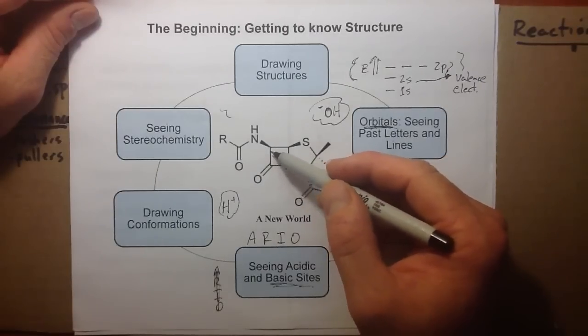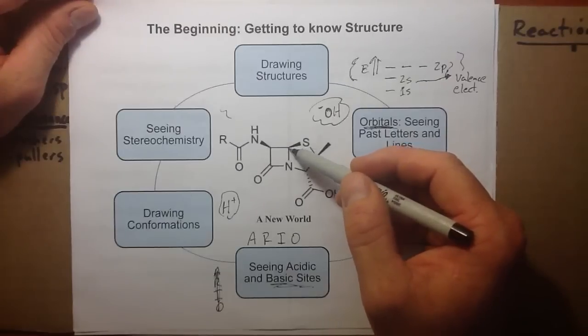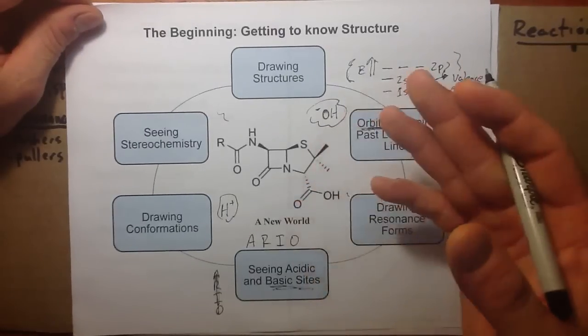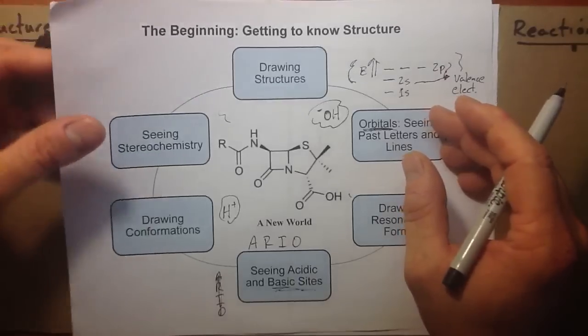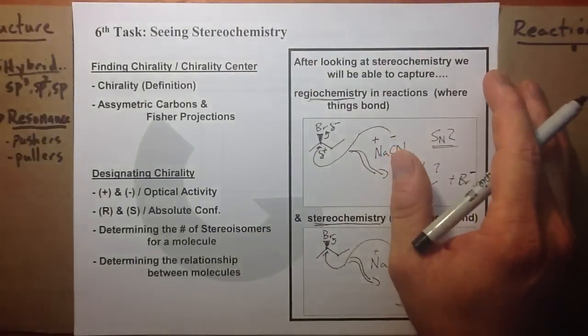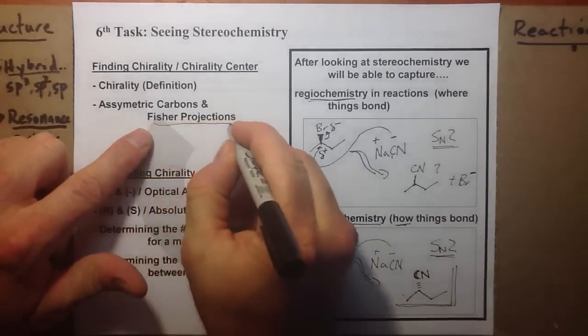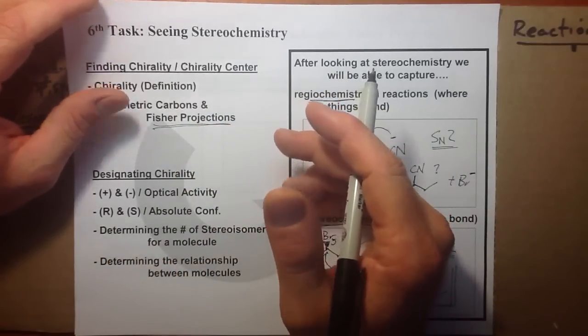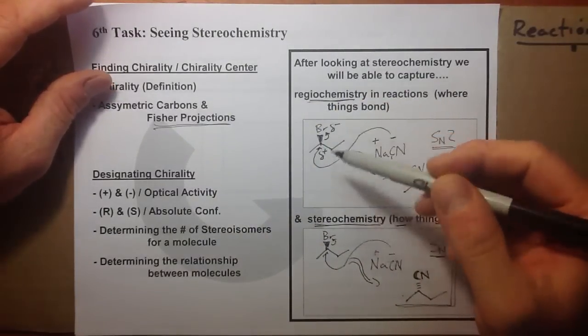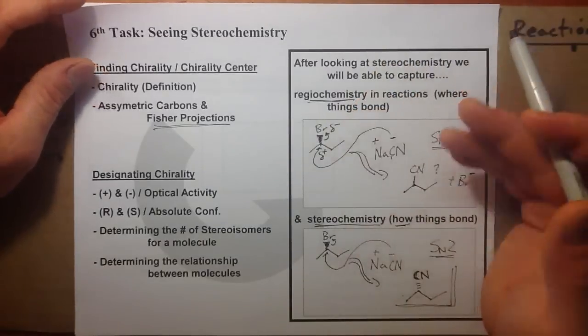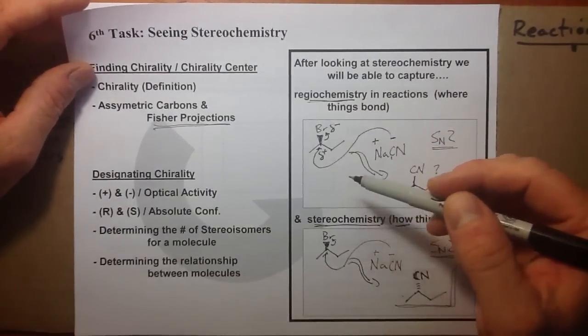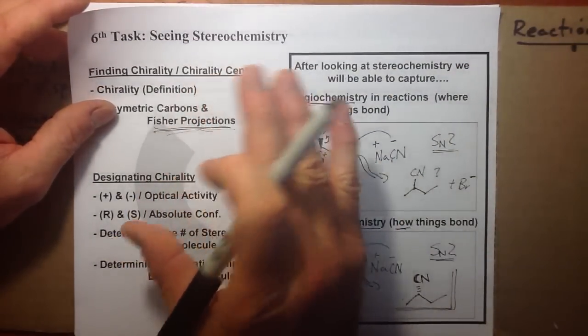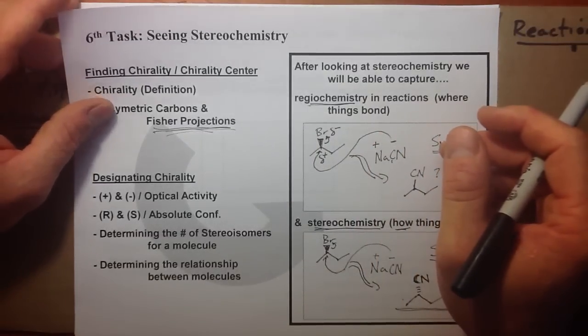So for penicillin here, we have three asymmetric carbons that we could designate as having an R or S notation that captures its chirality. Before we do that, I want to move to just one view of a structure you can consider: Fischer projections, which has a code to it. It really comes out of the biological world. It was used for sugars, showing not only regiochemistry but stereochemistry.